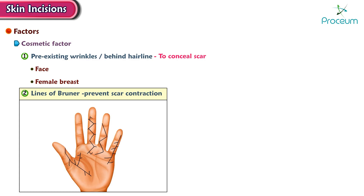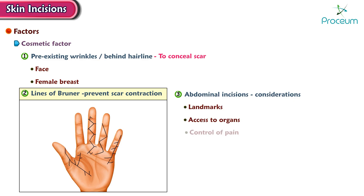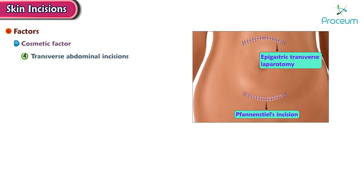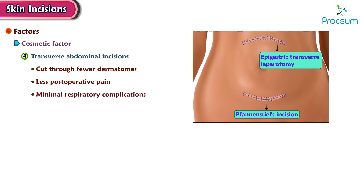Hand and feet incisions should be given along Brunner's lines to prevent scar contraction. As for abdominal incisions, these are planned electively considering landmarks, access to the organs, and control of pain. Standardized abdominal approaches should be employed. Transverse abdominal incisions cut through fewer dermatomes.